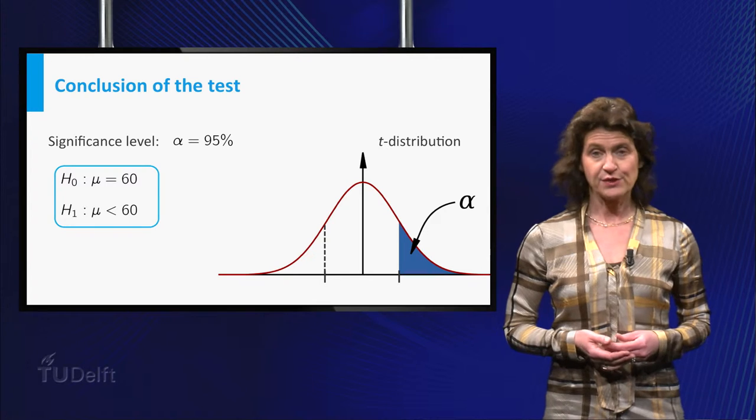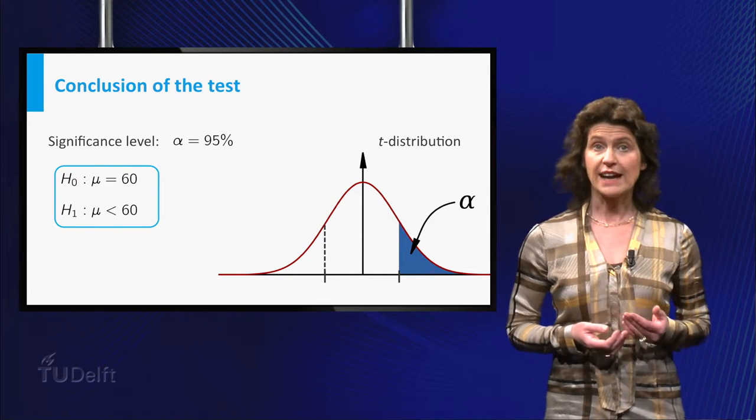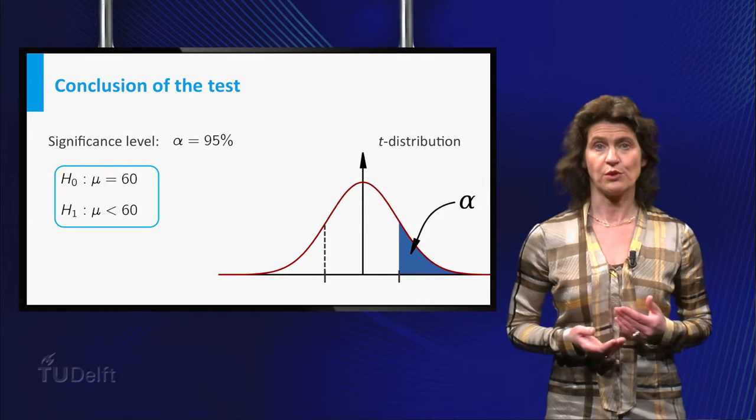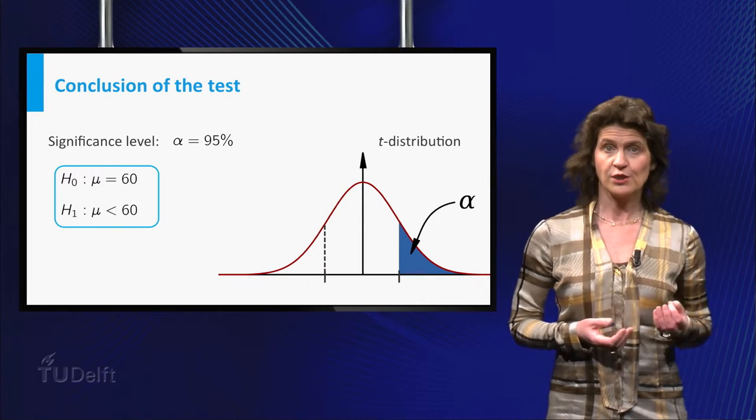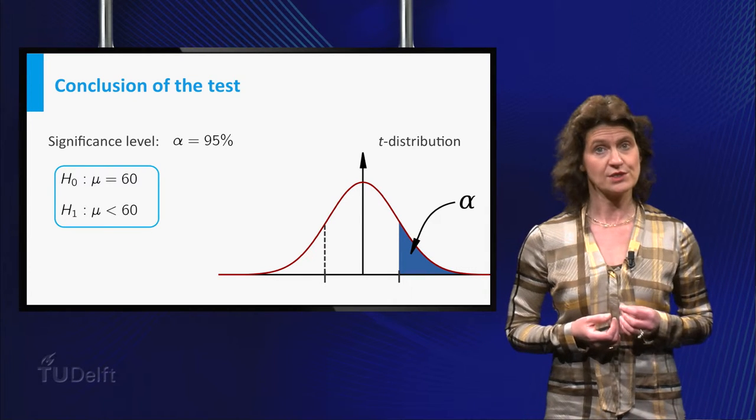Let's perform the test at a significance level of 95 percent. To decide whether you reject the null hypothesis, you have to compare the outcome of your test statistic t to the critical value of the t-distribution with 24 degrees of freedom.